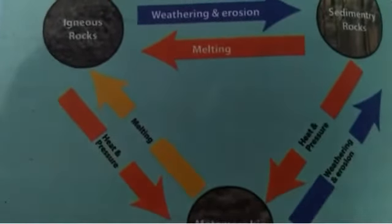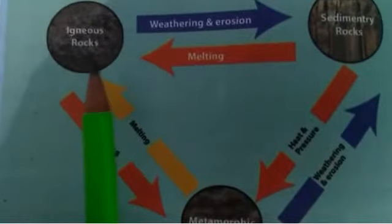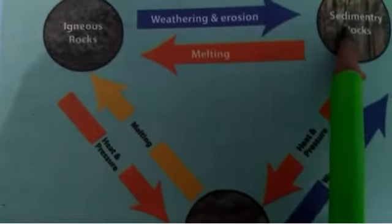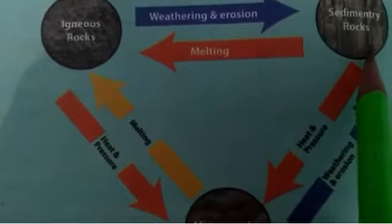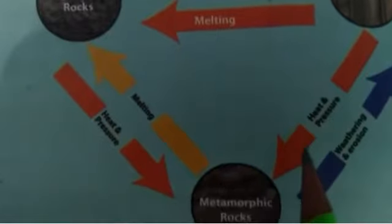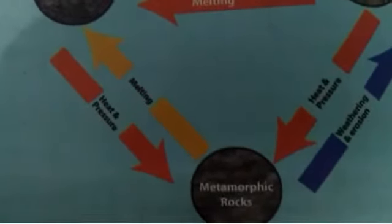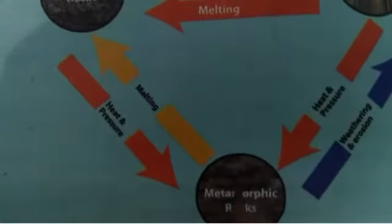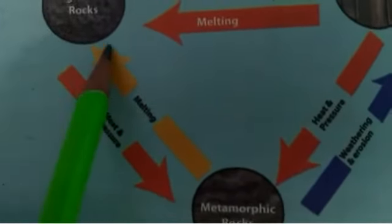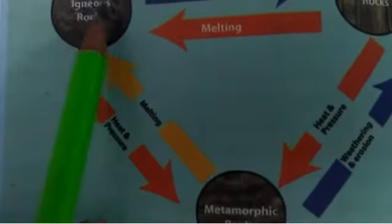Sedimentary rocks are formed through consolidation of sediments. This is the rock cycle: igneous rocks — the primary rocks — because of weathering and erosion are converted into sedimentary rocks. Then, because of heat and pressure, sedimentary rocks are converted into metamorphic rocks.